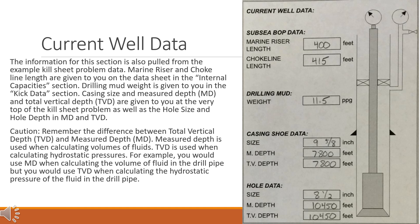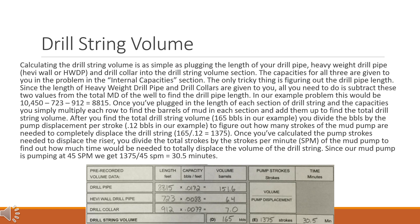Caution: remember the difference between total vertical depth (TVD) and measured depth (MD). Measured depth is used when calculating volumes of fluids. For example, you would use MD when calculating the volume of fluid in the drill pipe, but you would use TVD when calculating the hydrostatic pressure of the fluid in the drill pipe. Drill string volume: calculating the drill string volume is as simple as plugging the length of your drill pipe, heavy weight drill pipe (HWDP), and drill collar into the drill string volume section.